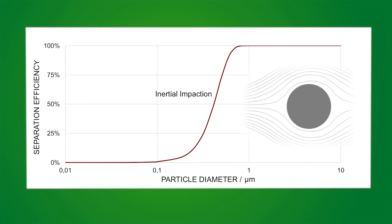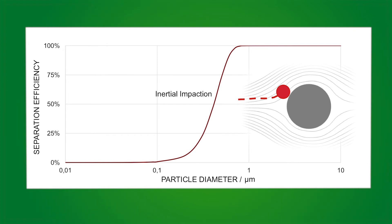The first mechanism is inertial impact. It occurs when air streamlines rather suddenly change their direction, for example around a fiber. But the particle follows the original path due to its inertia and collides with the fiber of the filter media. This effect is mostly predominant in particles bigger than 0.5 micrometers.